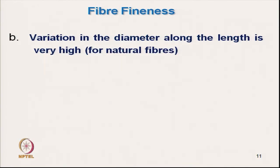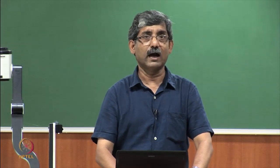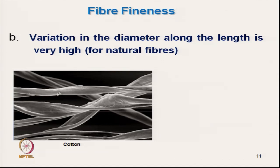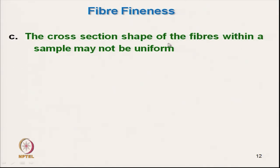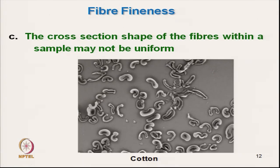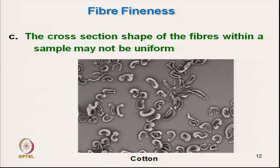Along the length, especially for natural fibres, diameter varies considerably — it is not a good idea to measure the diameter. For cotton, thickness changes at different portions. For wool, although mean diameter in microns is sometimes measured, natural fibre diameters are generally non-uniform. Within a sample, cotton fibre cross-sectional shapes are totally different from one another, so diameter measurement is normally not performed.